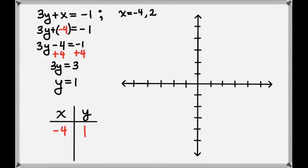Now let's plot this point. The negative 4 means that we'll go to the left 4 from the origin, and the 1 means that we'll go up 1 from that point. This gives us the point negative 4, 1, and we know that this is a point on our line.